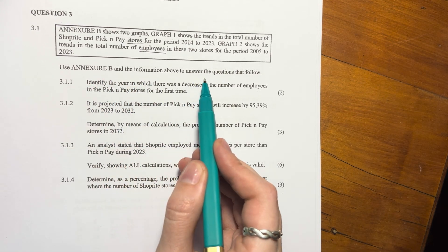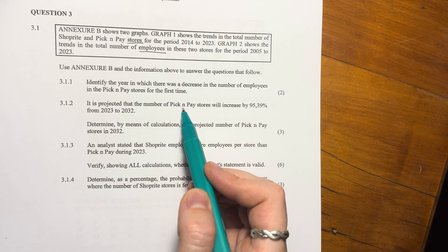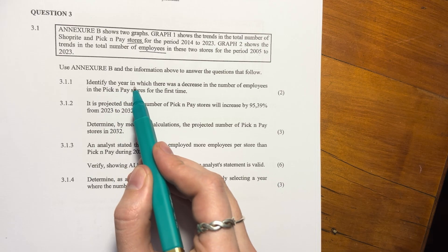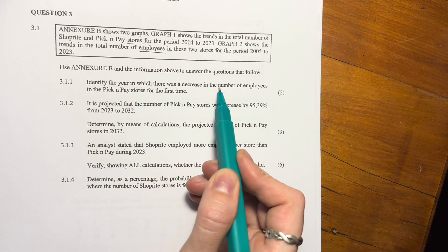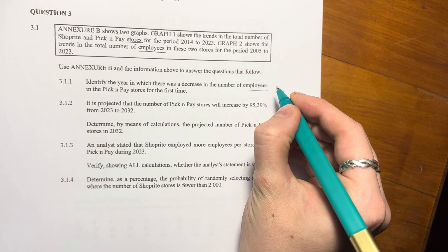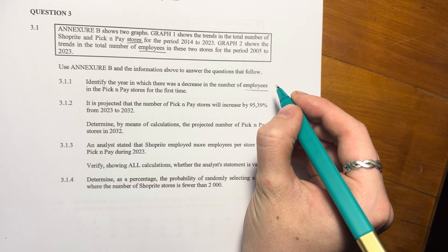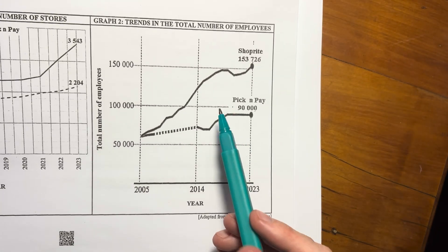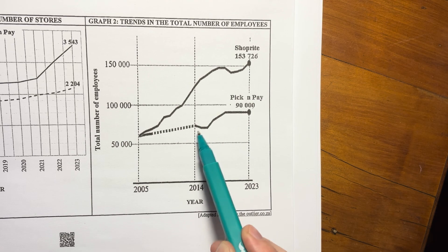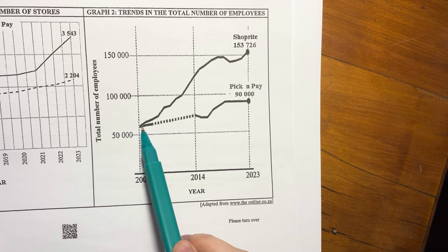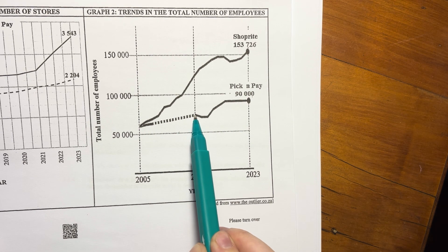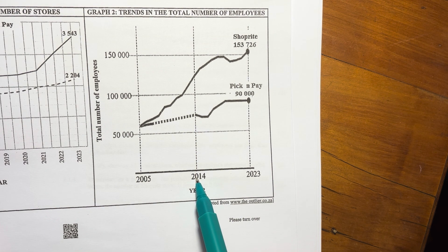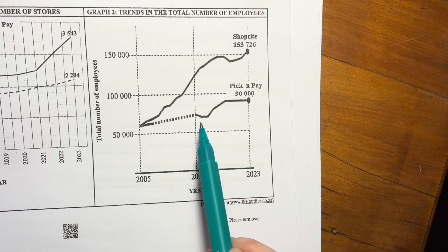Use Annex B and the information above to answer the questions that follow. Identify the year in which there was a decrease in the number of employees in the Pick n Pay stores for the first time. Right. So the Pick n Pay stores is this lower one. So you see it kind of went up and went up and up and then it only really went down for the first time just after 2014. So it wasn't in 2014. It's probably 2015. I think it's safe to say 2015.